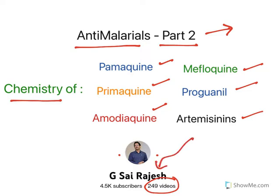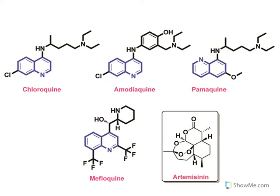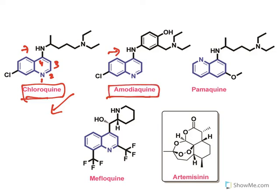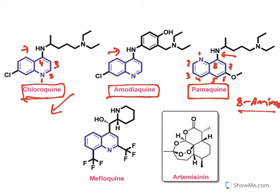Chloroquine and amodiaquine belong to a class known as 4-aminoquinolines — at the fourth position there is an amine substitution, hence they are called 4-aminoquinoline derivatives. Palmaquine and primaquine belong to 8-aminoquinoline derivatives, with amine substitutions at the eighth position. Mefloquine is a quinine methanol derivative, and artemisinin is an endoperoxide belonging to a different chemical class.